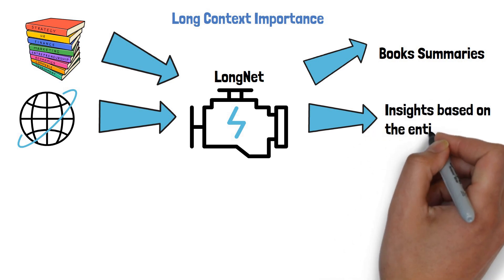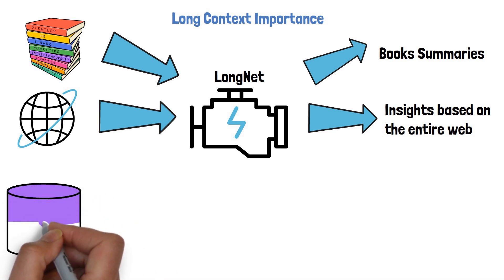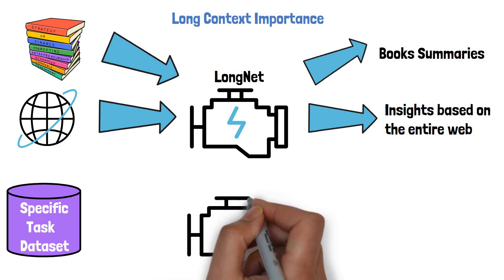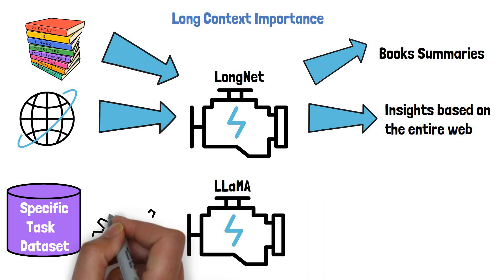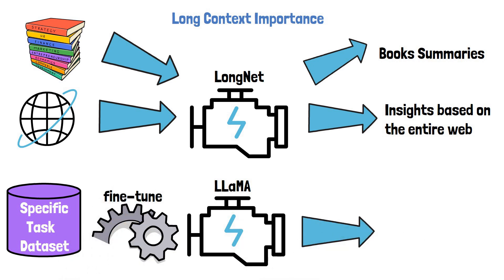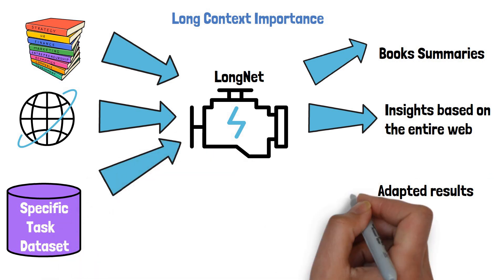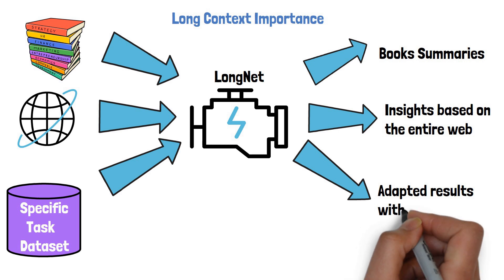Additionally, many times we want to have a model that is adapted to a specific task we have. In such cases, a common approach is to take a dataset that fits these specific tasks and take foundational large language models like LAMA and fine-tune the LAMA model on that dataset to be able to yield adapted results. With LongNet and its huge context, we can provide the dataset as context to the model and have it yield adapted results without fine-tuning.